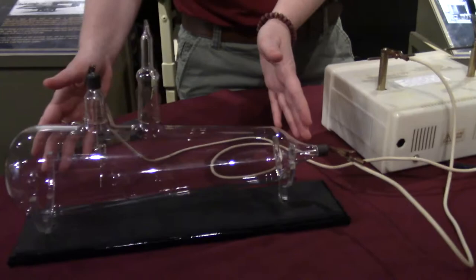Hi, Sam here from the National Electronics Museum. Today we're going to be looking at our demo, the Crookes tube, also known as the cathode ray tube.